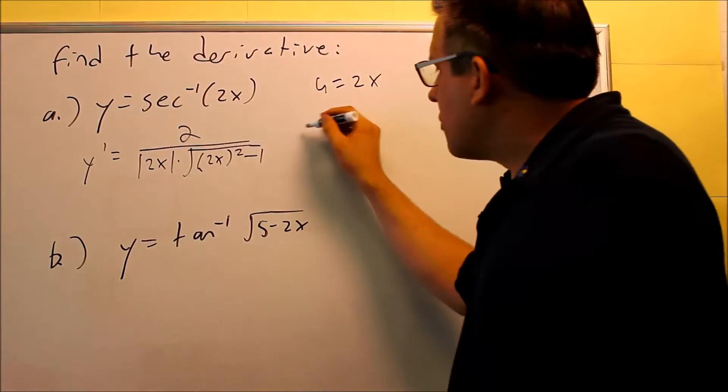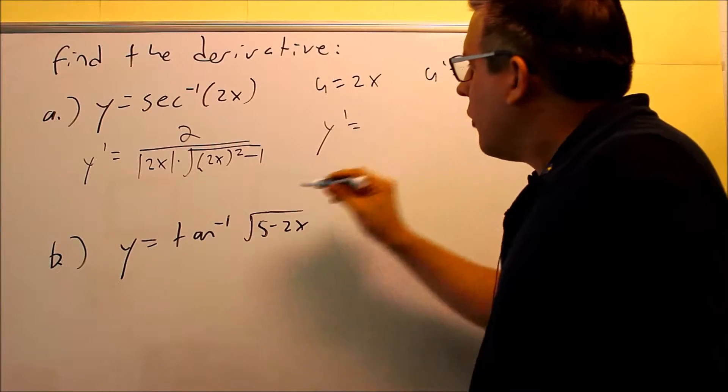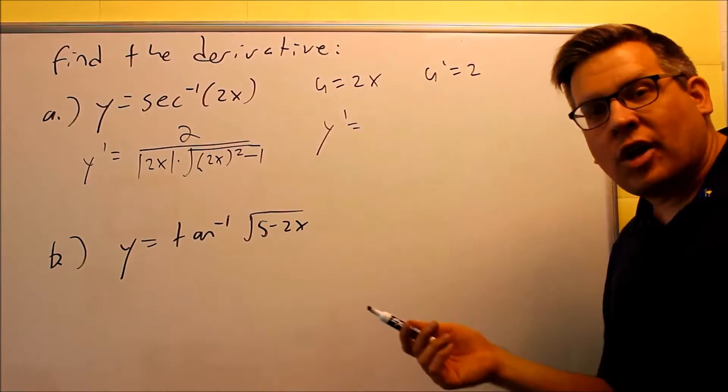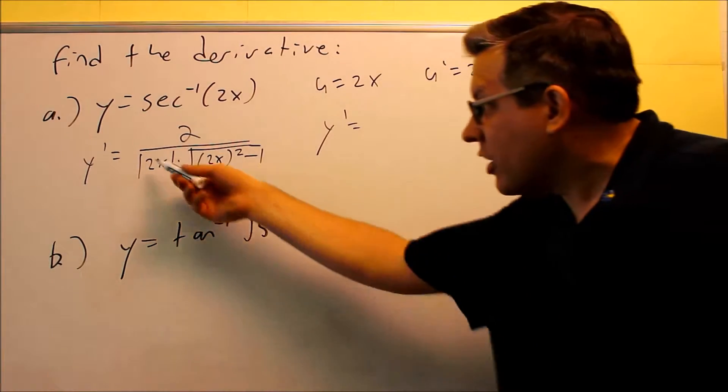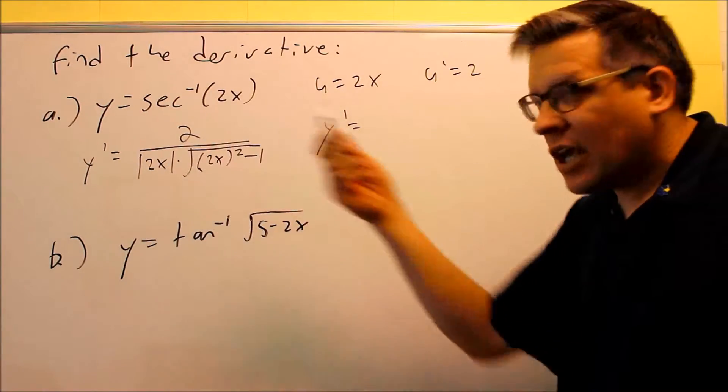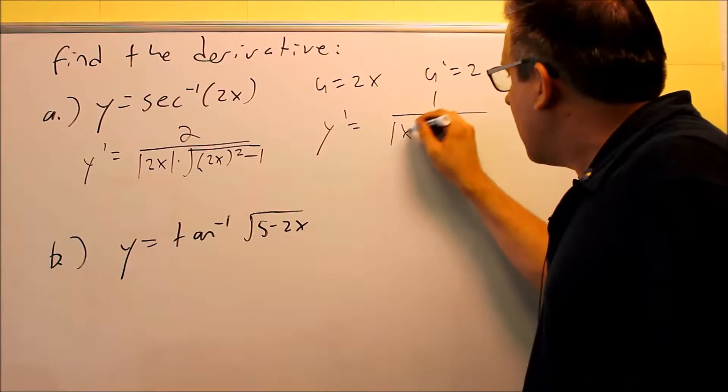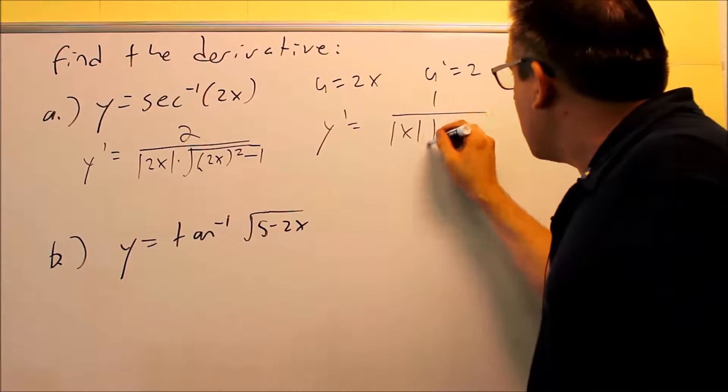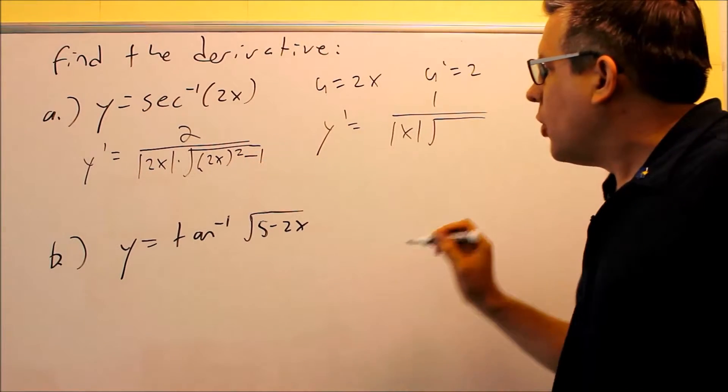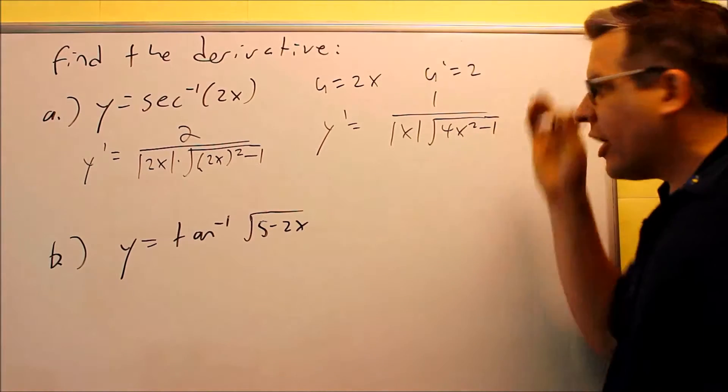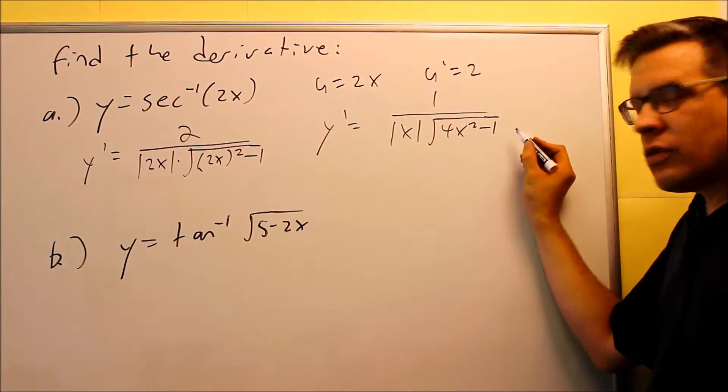And then we can do some simplifying. First of all, the 2's cancel. Now I have the 2 that's inside the absolute value, but the absolute value of 2 is 2, so I can technically pull that out, which means I can cancel out those 2's. So on top I'll have a 1, on the bottom I'm just going to have the absolute value of x, and then on the inside here I can square both of those, and I can make that 4x squared minus 1. That's as far as we can go with simplifying.